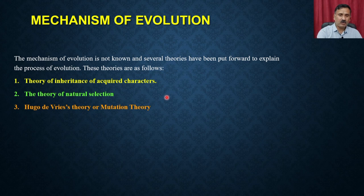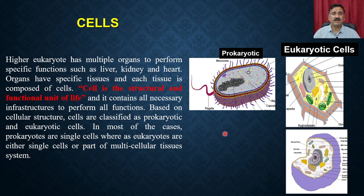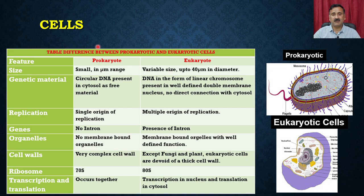Once we understood the mechanism of evolution, we discussed different types of cells. The cell is the structural and functional unit of life, and it could be prokaryotic or eukaryotic — within eukaryotic you can have plant or animal cells. The major difference between prokaryotic and eukaryotic cells is that the prokaryotic cell does not contain a nucleus; it only contains circular DNA present freely in the cytosol.